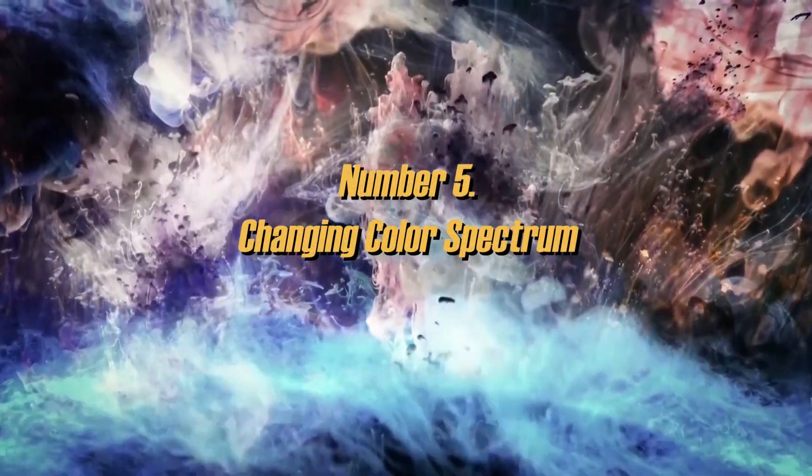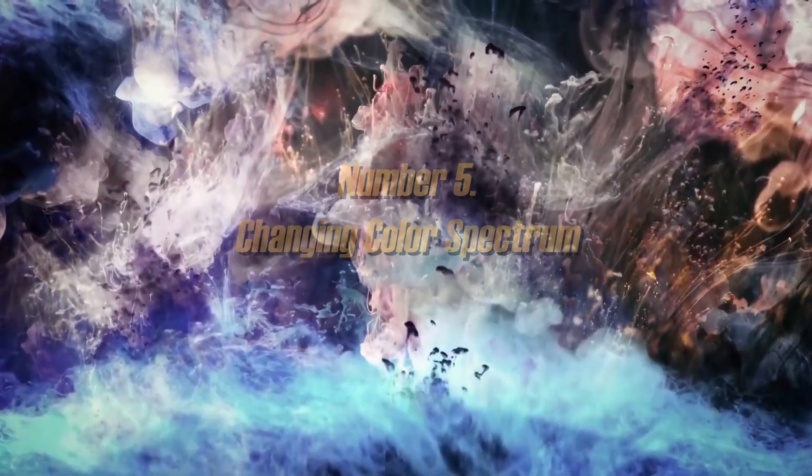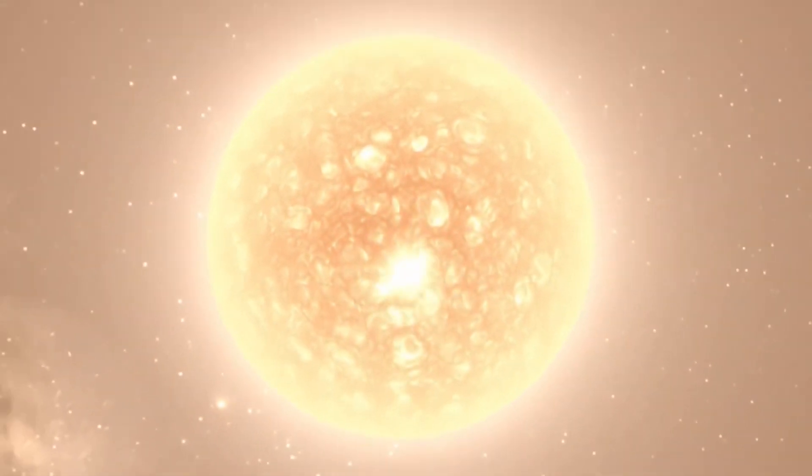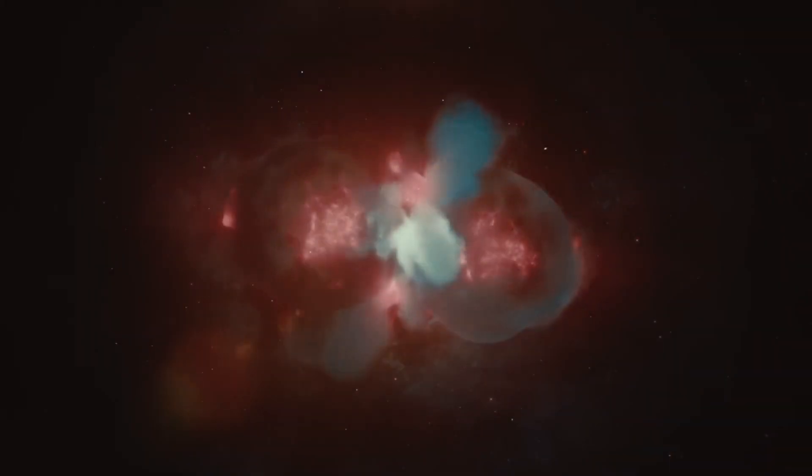Changing color spectrum. As the supernova evolves, its color spectrum could change, showing shades of red, orange, and yellow in the early stages, and then fading to cooler colors as it expands and cools.